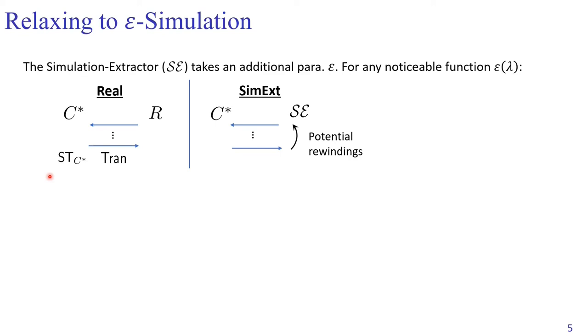That is, instead of trying to simulate the post-extraction state STC star with negligible error, we now allow a noticeable error gap. More accurately, we require the existence of a simulation extractor SE. SE takes a noticeable function epsilon as a parameter. Now we compare two worlds. The first world is the real execution. We denote STC star as the state of the malicious committer at the end of the execution. We use this notation to denote the transcript, which consists of all the interaction messages between C star and R. In the real world, we concern this tuple. This value denotes the message committed by C star.